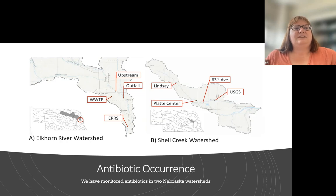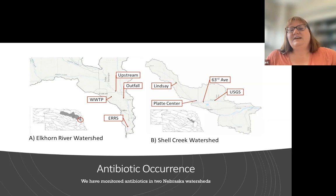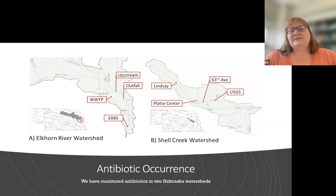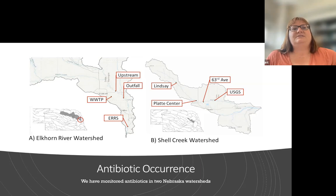A second watershed where we've done quite a bit of sampling is the Shell Creek watershed, located in north-central Nebraska. This is a much smaller, very agricultural watershed with relatively few people living within it. It has many more head of animals, predominantly beef cattle and swine. We have different sampling locations monitored from the town of Lindsay, Nebraska, Platte Center, and a location where the USGS has a gauging station providing continuous flow information for Shell Creek.